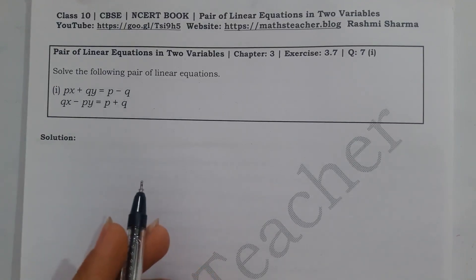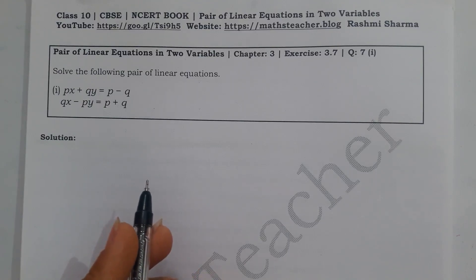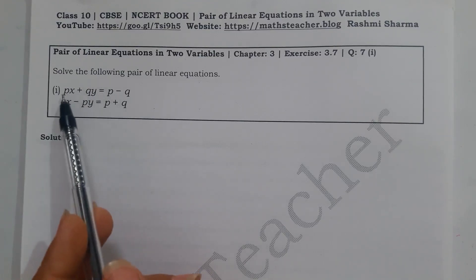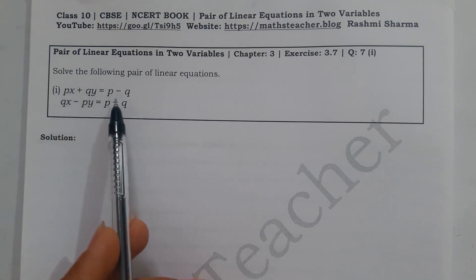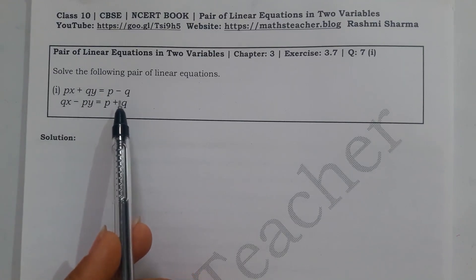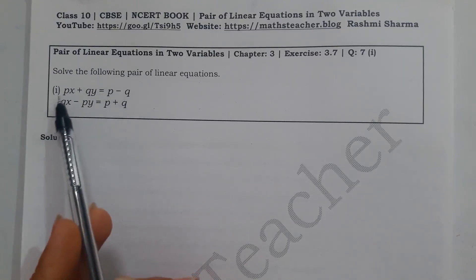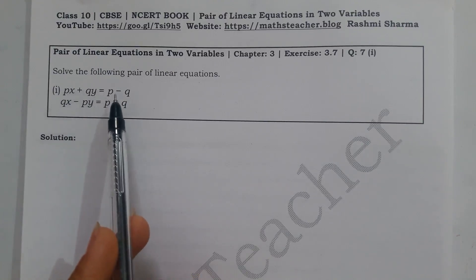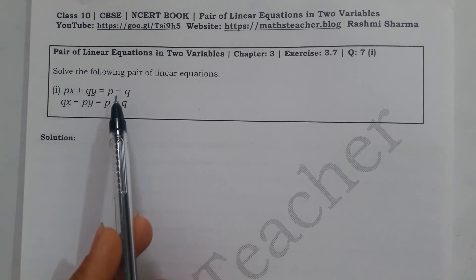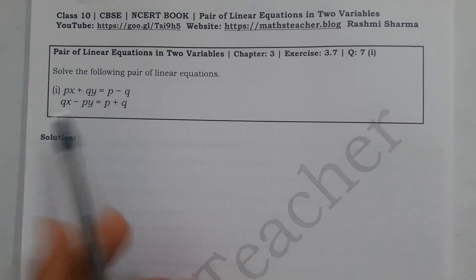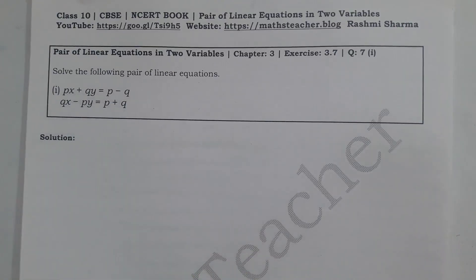We will use cross multiplication method and elimination method. Graphical method would not work well here because p and q are also variables. The substitution method involves finding one variable and substituting into the other equation. So first we will solve this question by cross multiplication method, then by elimination method.